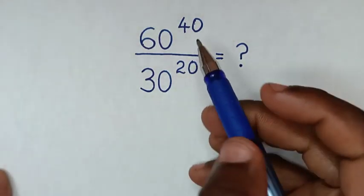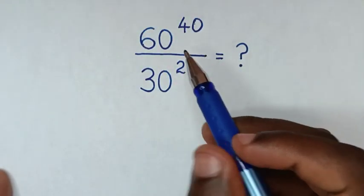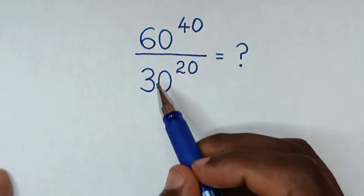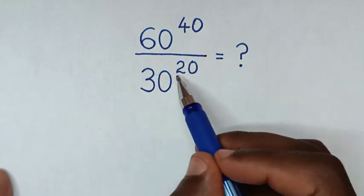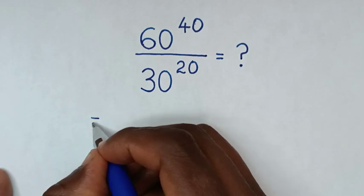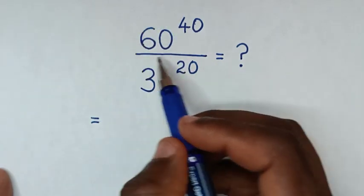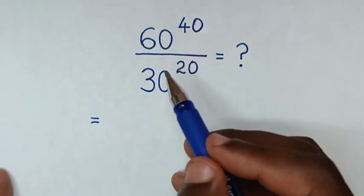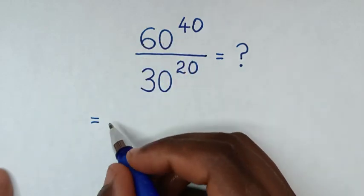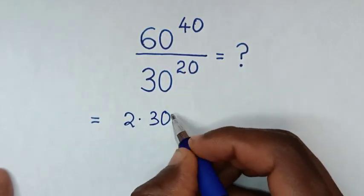Hello, you are welcome to solve this math problem which is 60 power 40 over 30 power 20. From this base of 60 we make a common base of 30, so 60 is the same as 2 times 30.